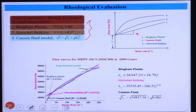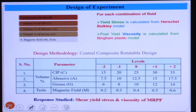The experiments varied CIP concentration from 15 to 35 percent, abrasive from 7.5 to 17.5 percent, grease from 6 to 14 percent, and magnetic field from 0.2 to 0.6 Tesla. These four variables were studied using a central composite rotatable design, and yield stress and viscosity were measured as responses.